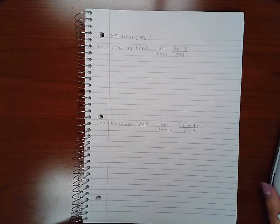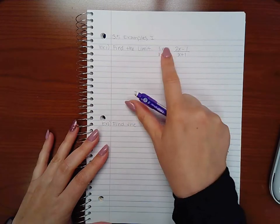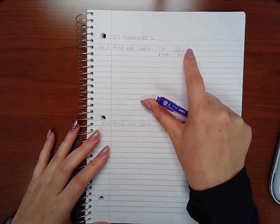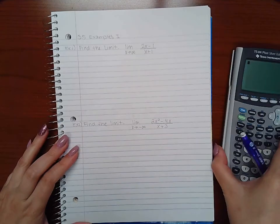This is examples part one of section 3.5. The first example says find the limit as x approaches infinity of this fraction here: (2x minus 1) all over (x plus 1). So remember the technique that we said we were going to try.